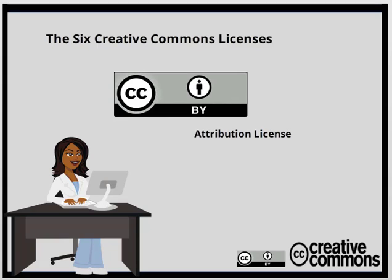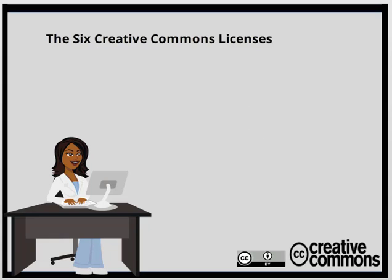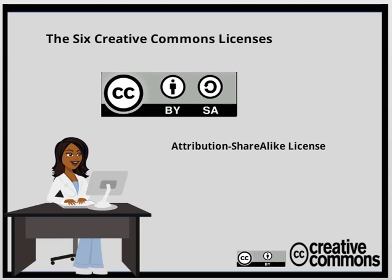This one isn't as restrictive as some of the others, as long as attribution is given to the creator. The CC in the circle and the BY is part of every license, so watch for those as we move forward. The next license is the attribution share alike license, or CC BY-SA. This allows people to use the work for any purpose, even commercially and even in a modified form, as long as they give attribution to the creator. Once they've made their adaptations and share with others, they need to share it under the same license or a compatible license.